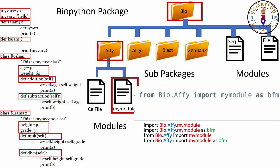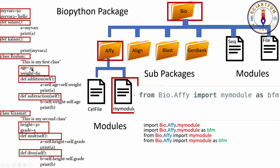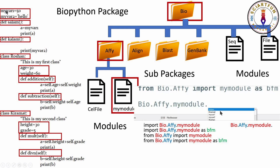Our second objective: how to see the contents — variables, functions, or classes — of the imported module. For example, the module contains two variables, two functions, and two classes. If you imported with 'import Bio.Align.my_module', type 'Bio.Align.my_module.' and as soon as you put a dot, you will see the list of these contents appear on screen if you are using an IDE, for example PyCharm.